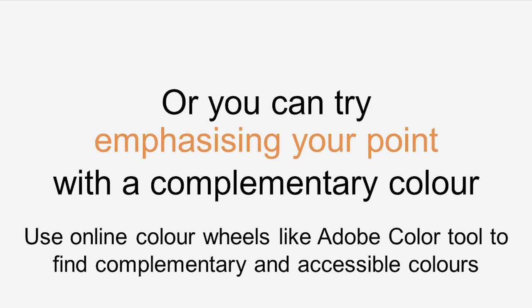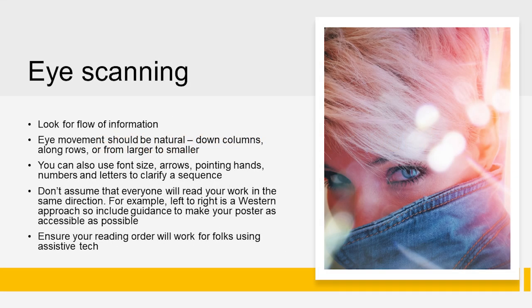If you are using text, try emphasising your main point with a complementary colour to highlight it so people are drawn to it quickly. If you need a colour palette, try using an online colour wheel to find complementary and accessible colours. Adobe Colour is a handy tool for this and also shows what colours might look like for those who may see colour differently to you. Look for the flow of information — eye movement should be natural, down columns, along rows or from larger to smaller. You can use font size, arrows, pointing hands, numbers and letters to clarify a sequence.